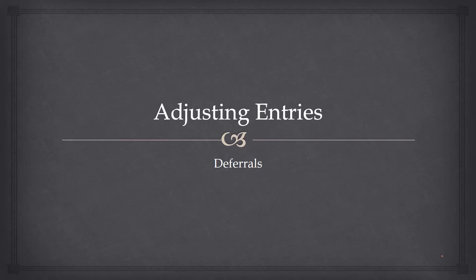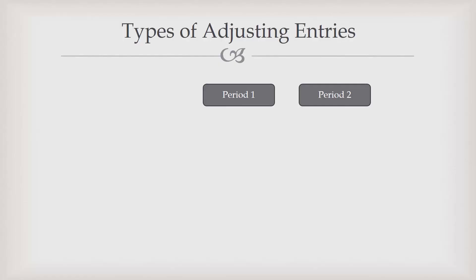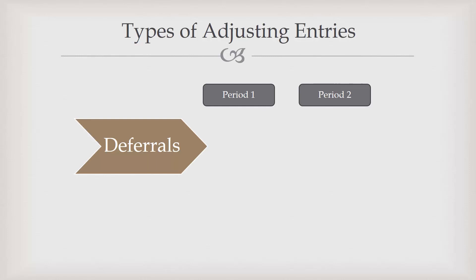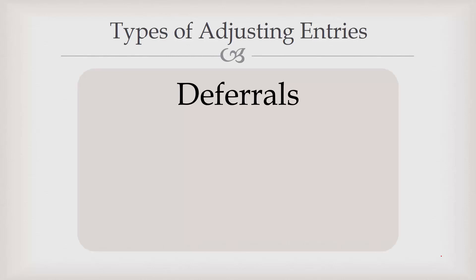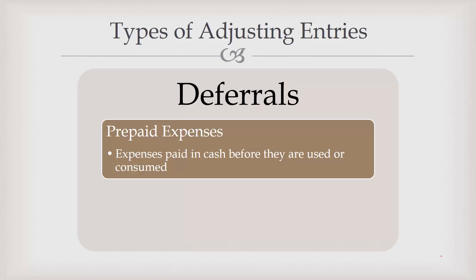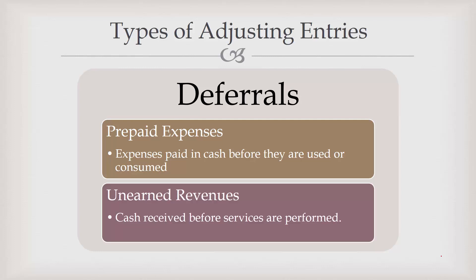In this video I'm going to talk about adjusting entries and specifically the deferral category of adjusting entries. A deferral occurs when the cash is received or paid in the first period, but the recognition of the revenue or expense doesn't occur until a later period. Our two categories of deferrals are prepaid expenses, where expenses are paid before they are consumed, and unearned revenue, where the cash is received before we perform our service.